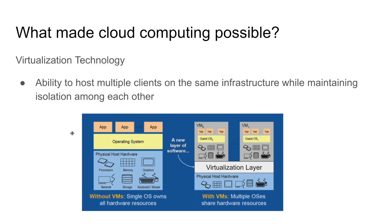If you guys haven't heard about this, the concept is this. Suppose this is one particular physical server. In the physical server, you have processors, memory, graphics, network, storage, everything. On top of this hardware, you have an operating system running — Windows, Linux, or Mac OS. And on top of that, you have your applications: Safari, word processing, Excel, Skype — all those different applications running on top of your operating system.